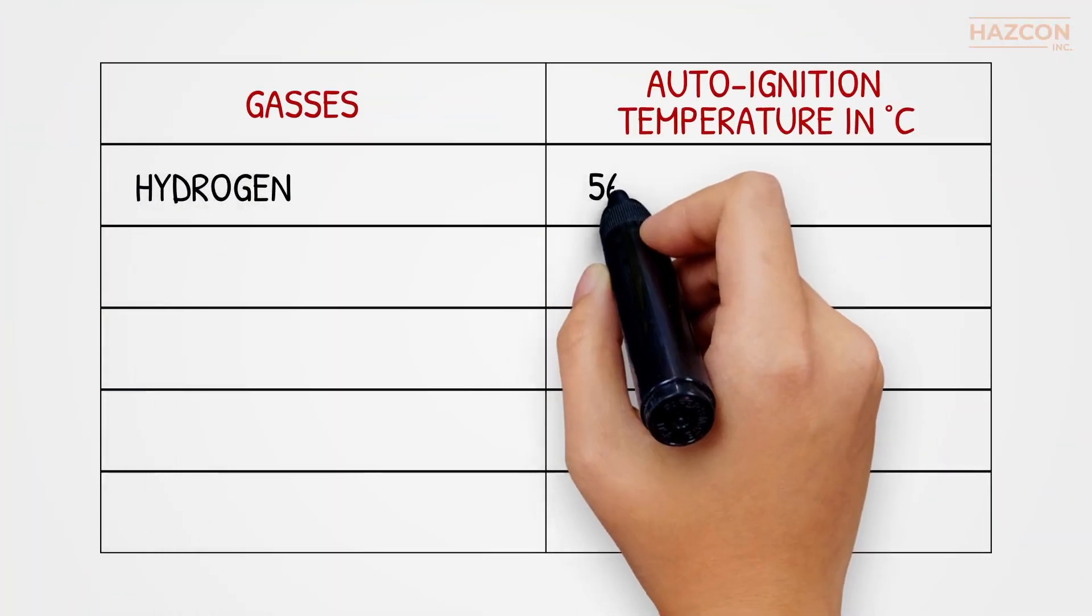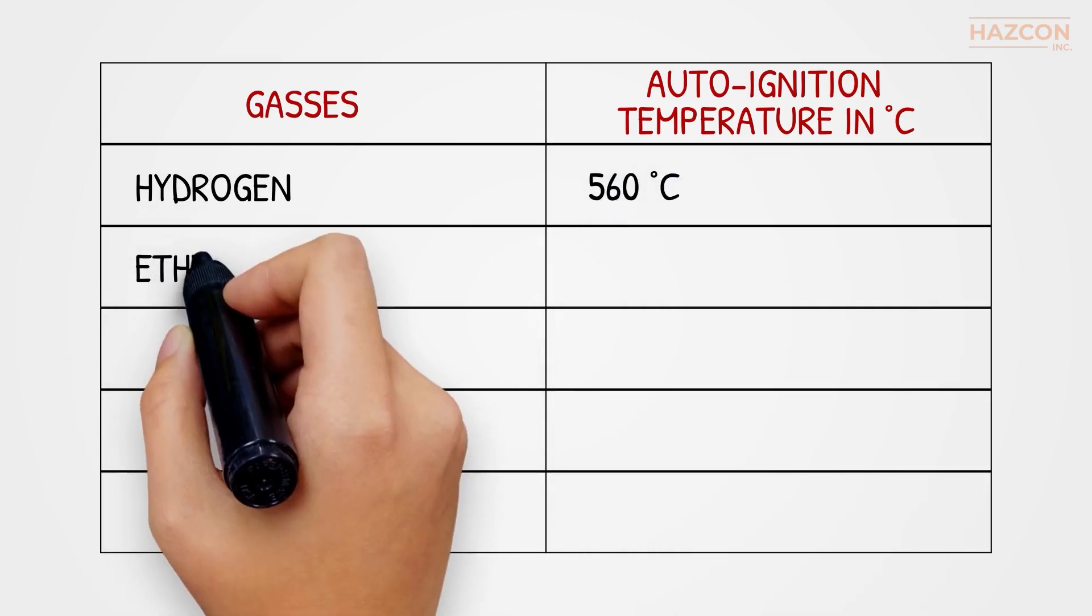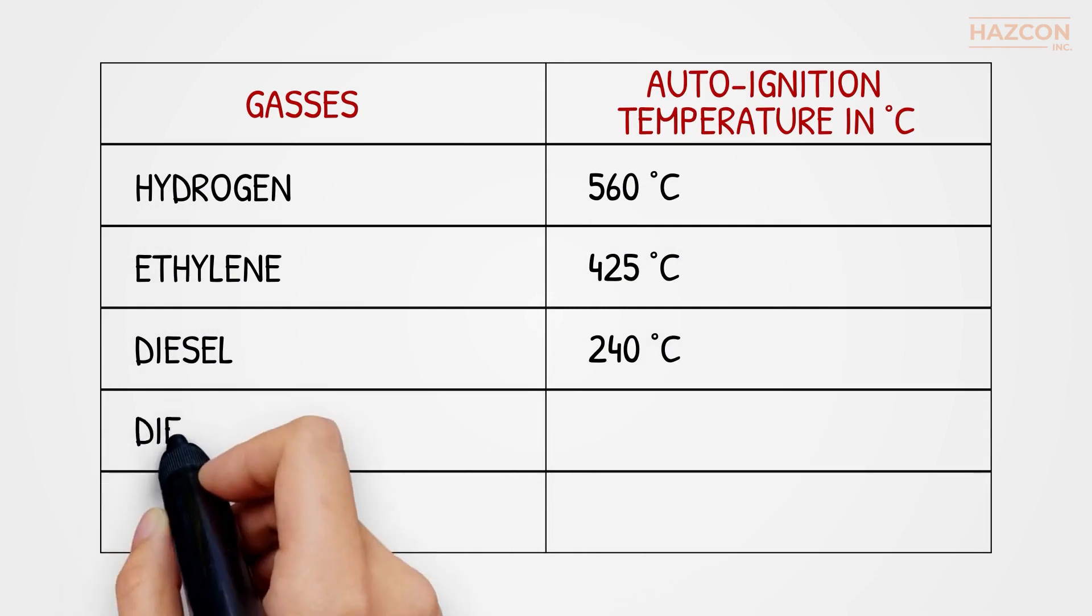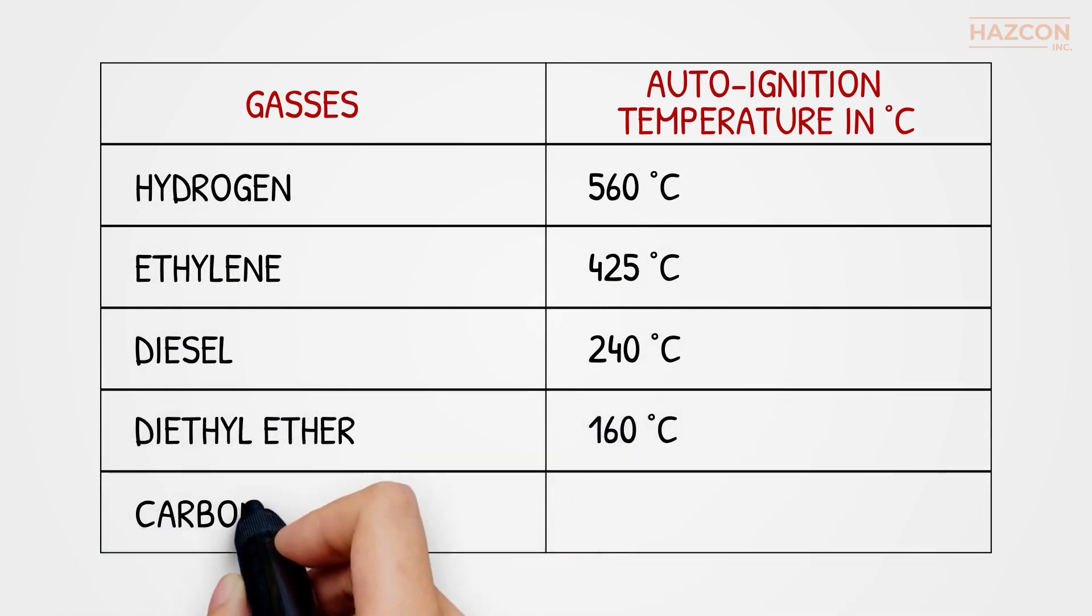For instance, hydrogen has an auto-ignition temperature of 560 degrees Celsius, ethylene 425, diesel 240, diethyl ether 160, and carbon disulfide has 95 degrees Celsius.